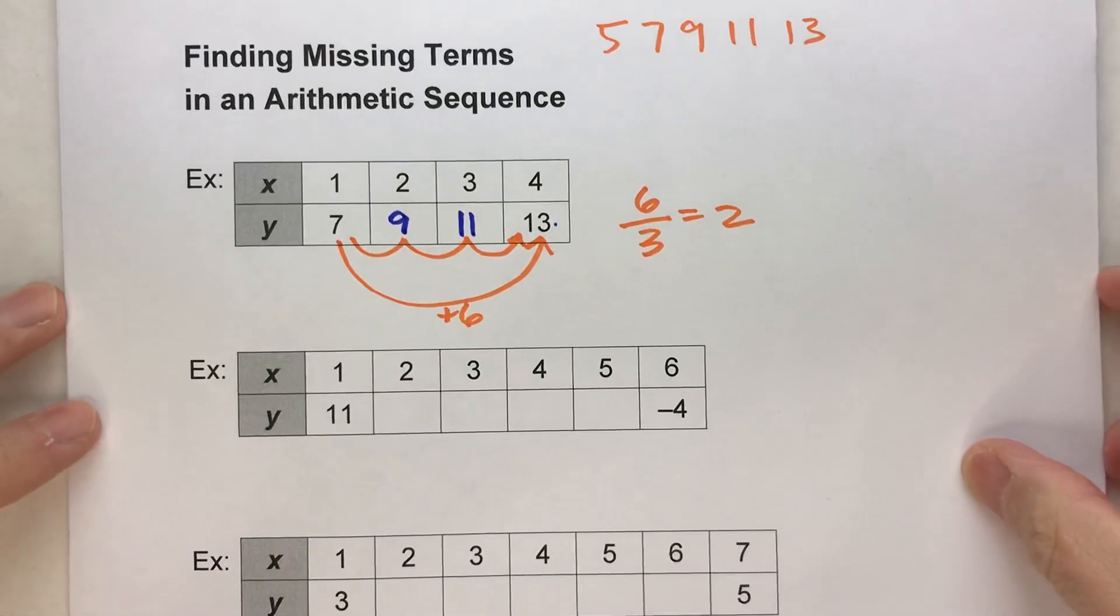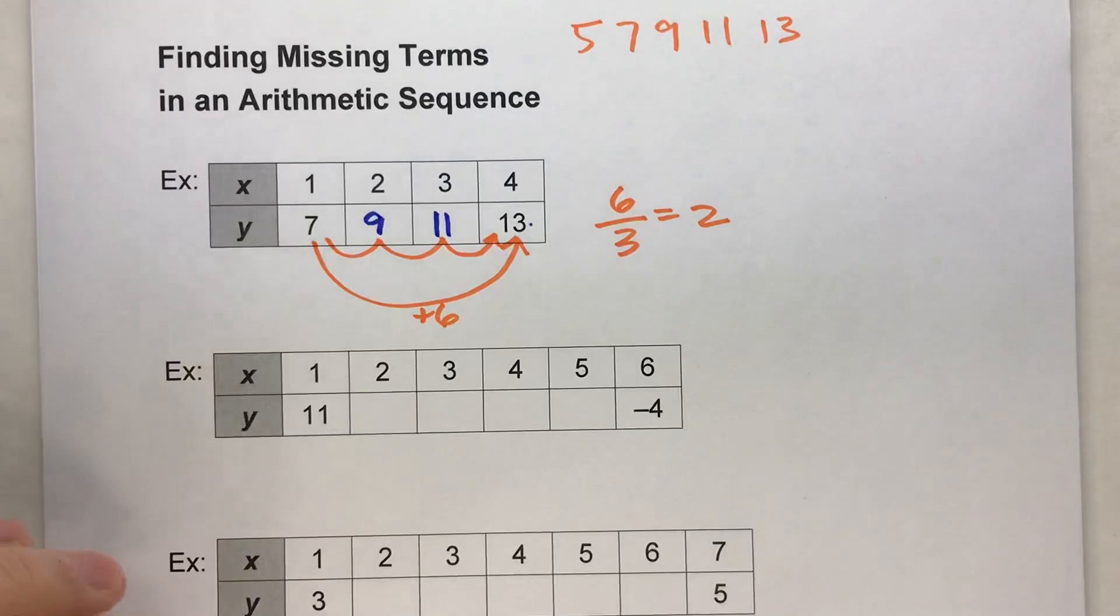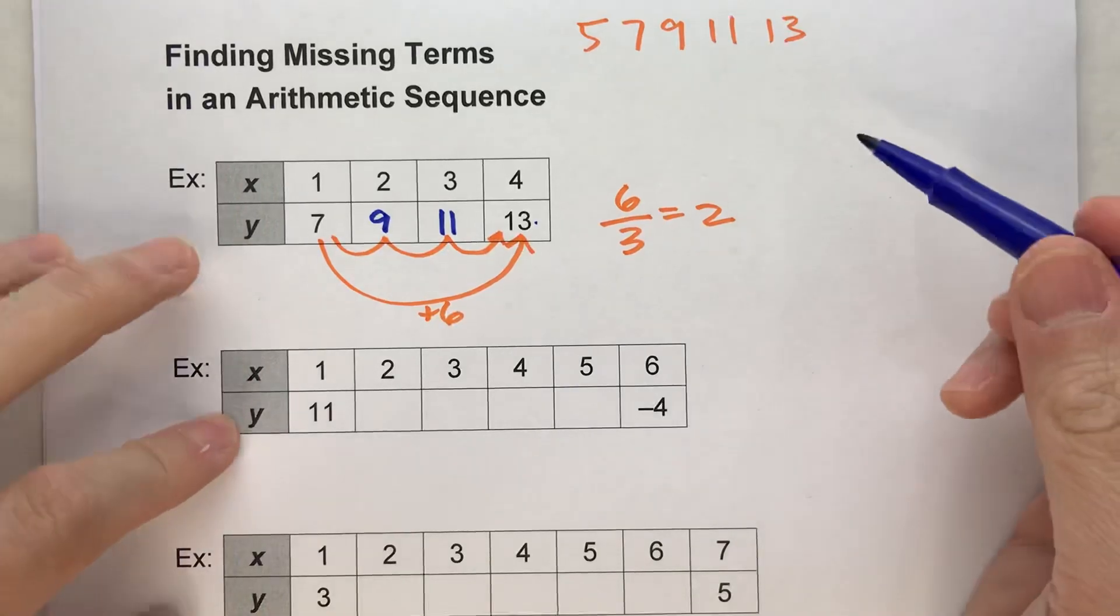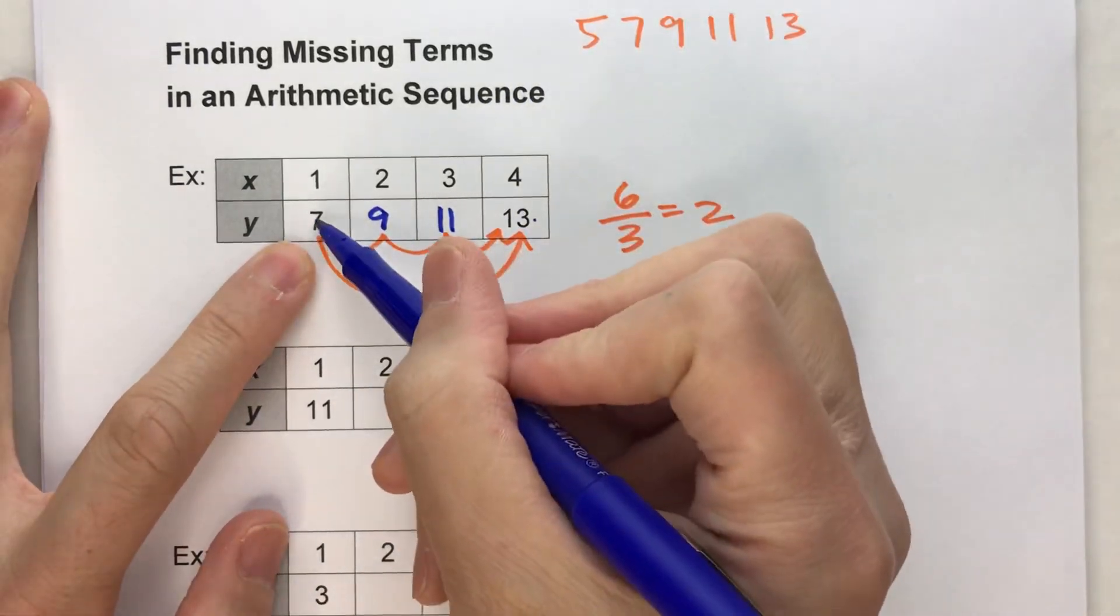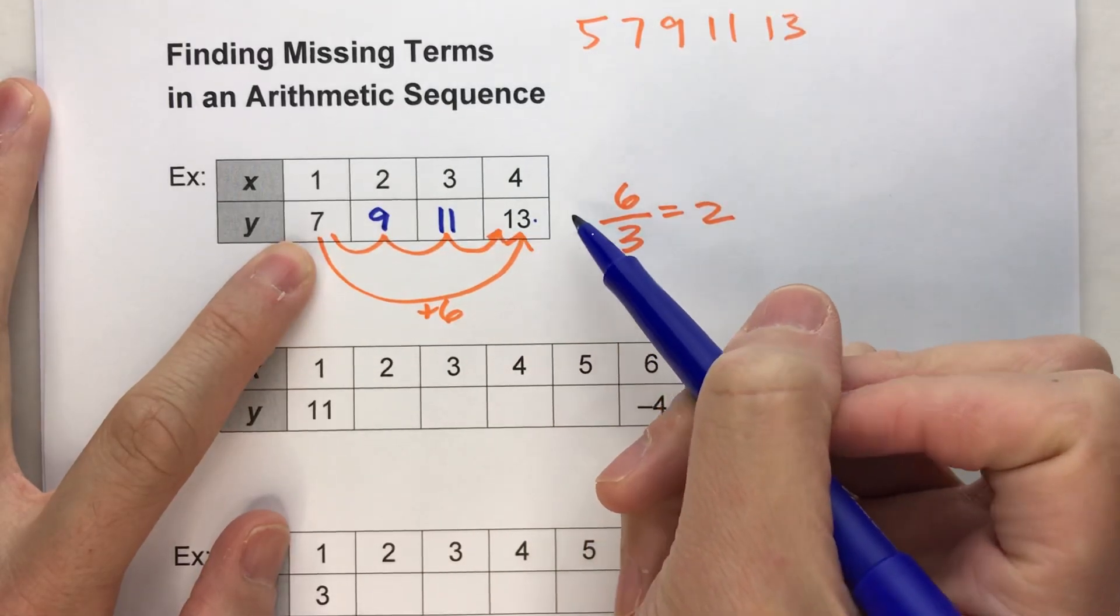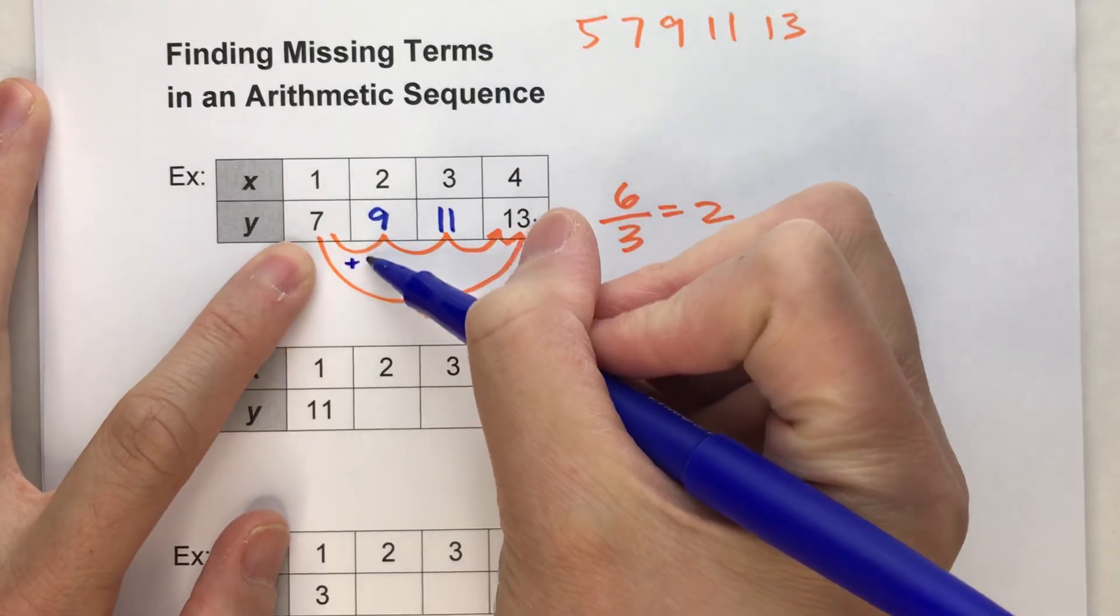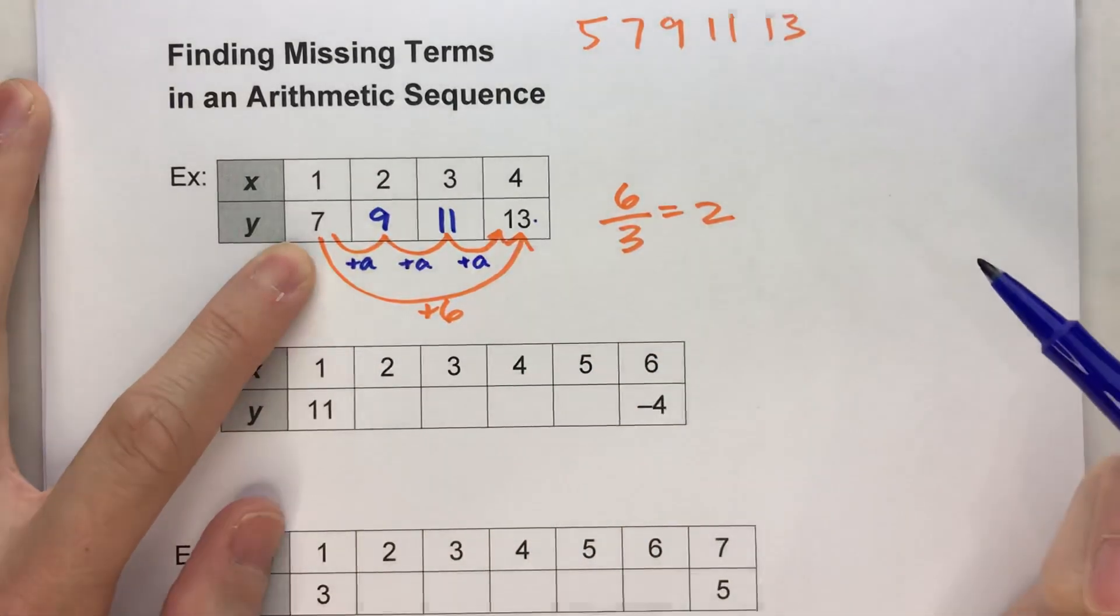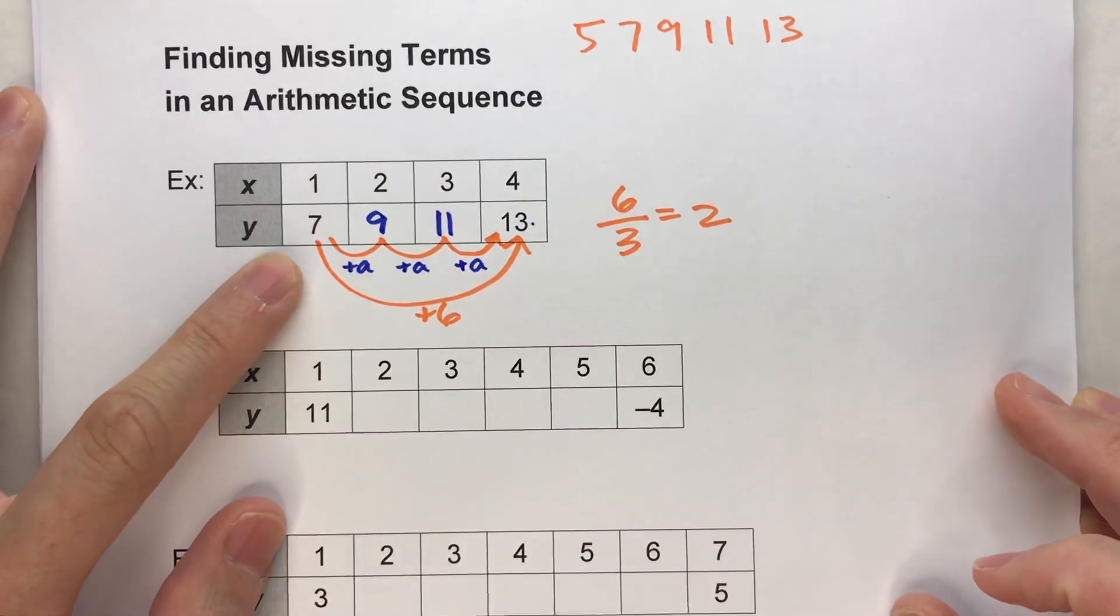So that's the more intuitive way to do it. Now, if you want to do a more algebraic method, you can think of it this way. We're starting at 7, and we're repeatedly adding the same amount every single time. Let's call it A. We're repeatedly adding A, and let's say we don't know what A is.